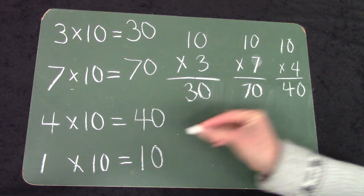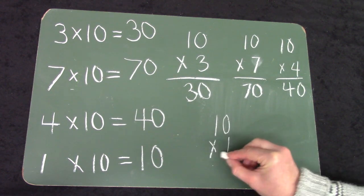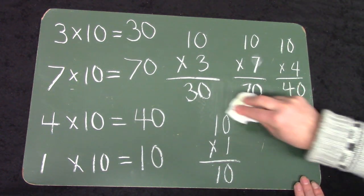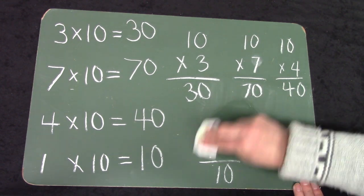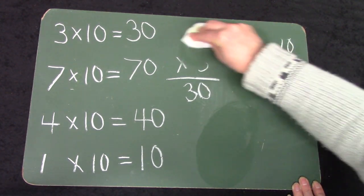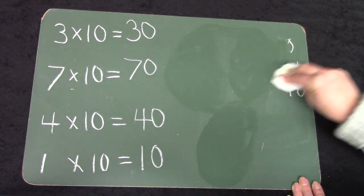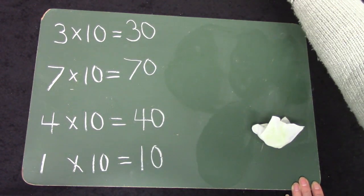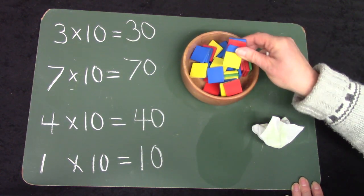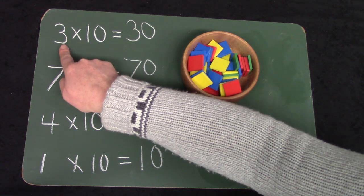And our last question — one group of ten equals? Well, that's easy: ten. Today I would love for you to practice multiplying groups of ten. You can put some little objects into groups of ten, just like we did with our squares, and then you can count the groups.